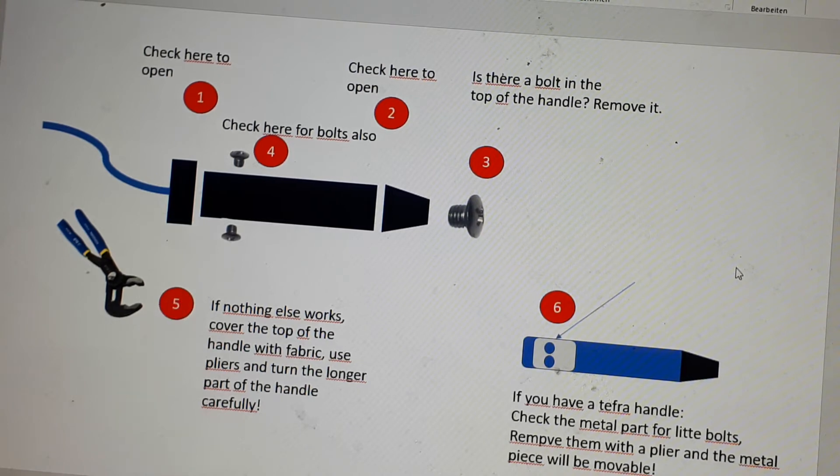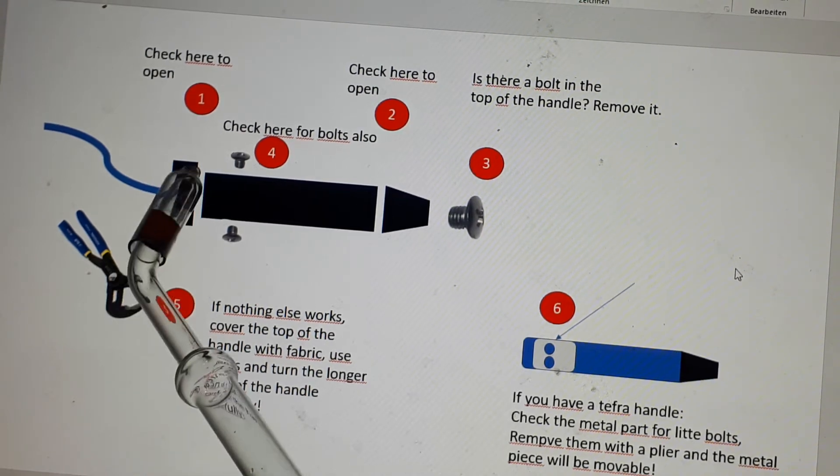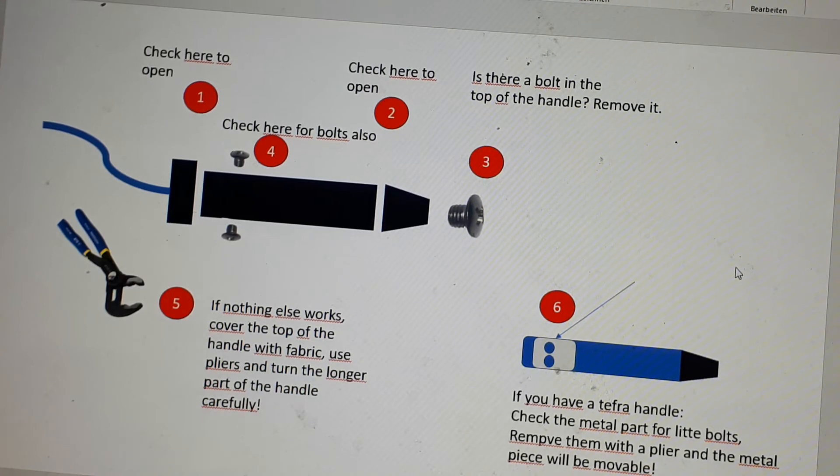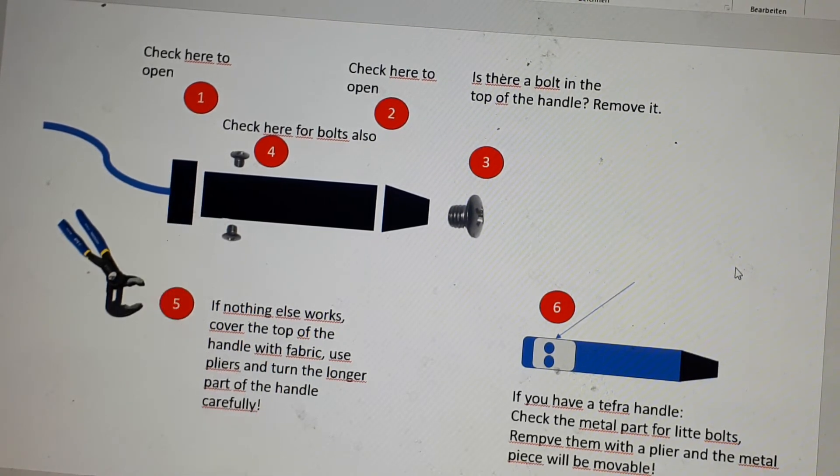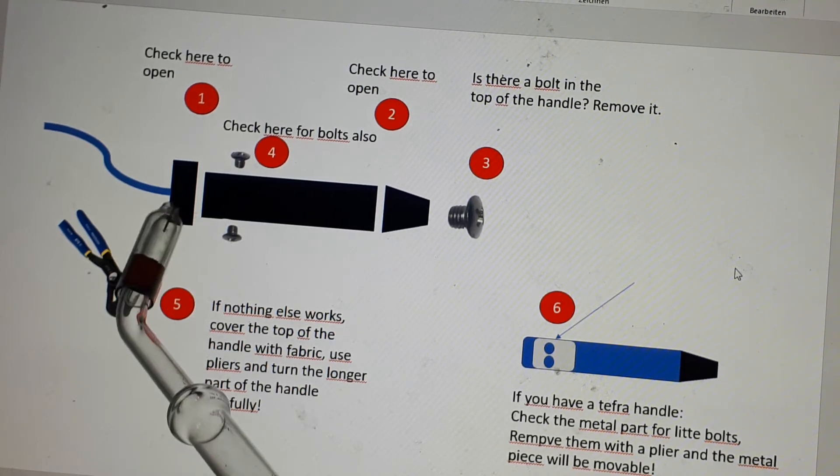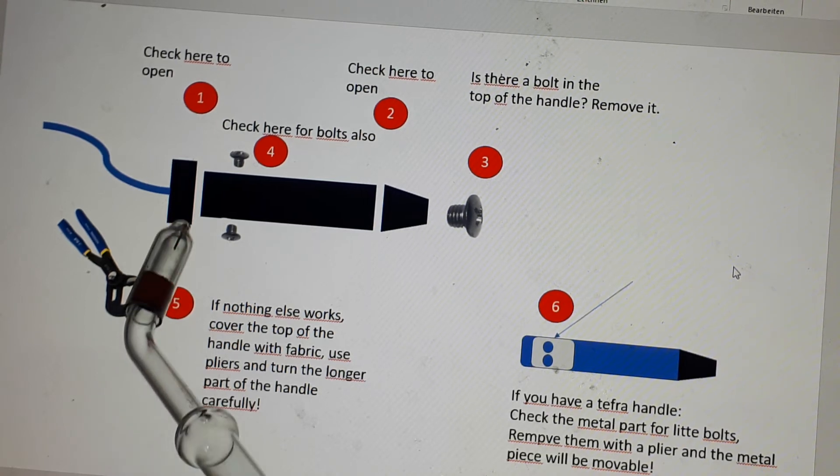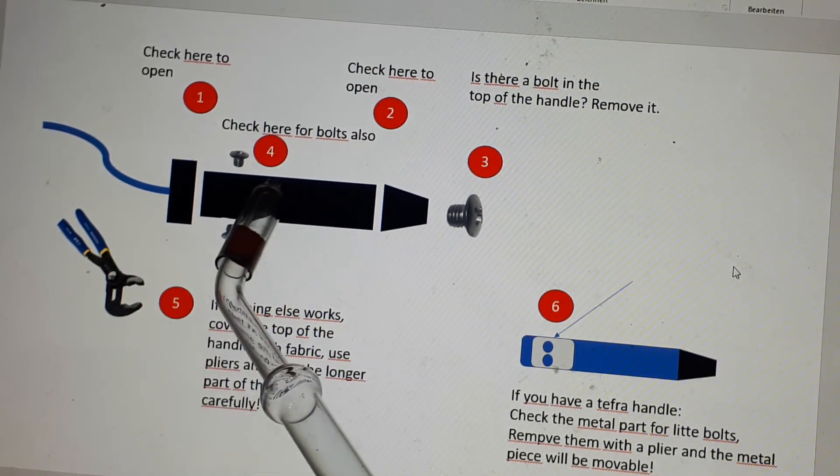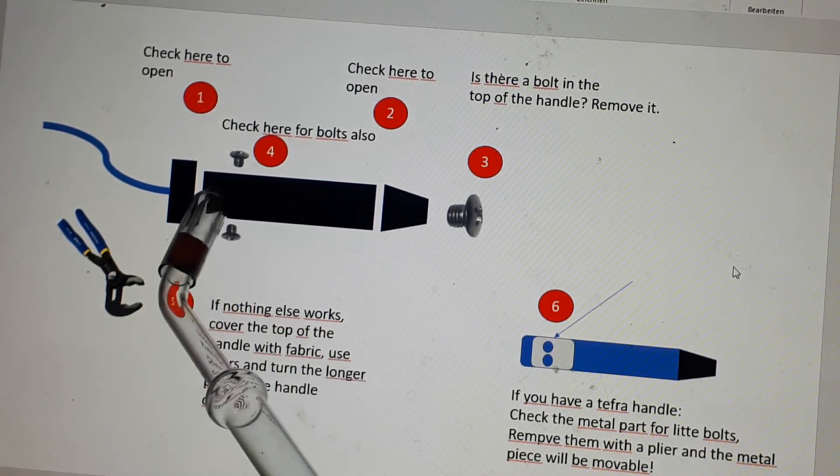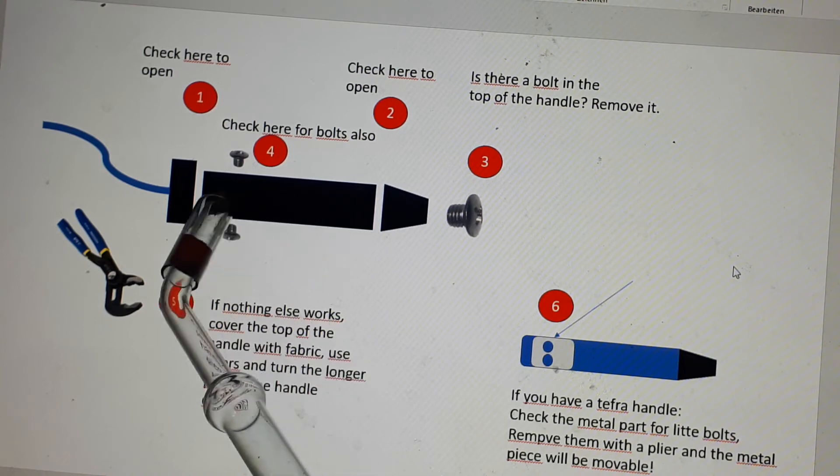If somebody has put glue on this connection here in the past, it will be very difficult to get this open again. And for this case, I'm using a plier. The procedure is such that I cover the top part with fabric, and then put the plier on it, and then move the middle part, which is easier to move.